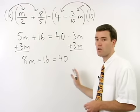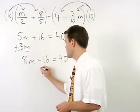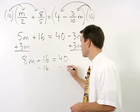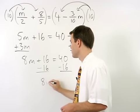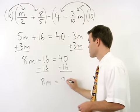Now we move our numbers to the right by subtracting 16 from both sides, and we get 8m equals 24.